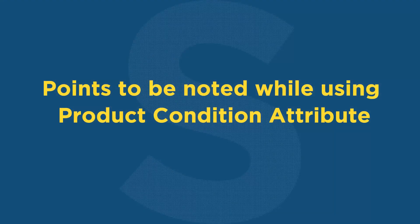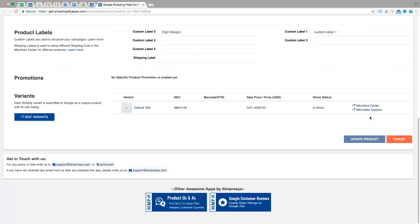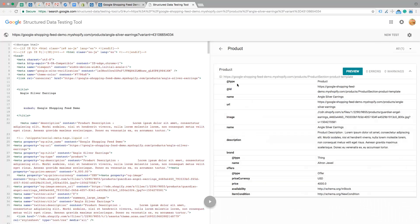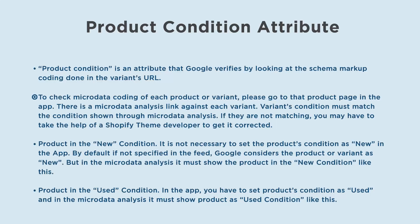Points to be noted while using the Product Condition attribute: Product condition is an attribute that Google verifies by looking at the schema markup coding done in the variant's URL. To check microdata coding of each product or variant, please go to that product page in the app. There is a Microdata Analysis link against each variant. The variant's condition must match the condition shown through Microdata Analysis. If they are not matching, you may have to take the help of a Shopify theme developer to get it corrected.